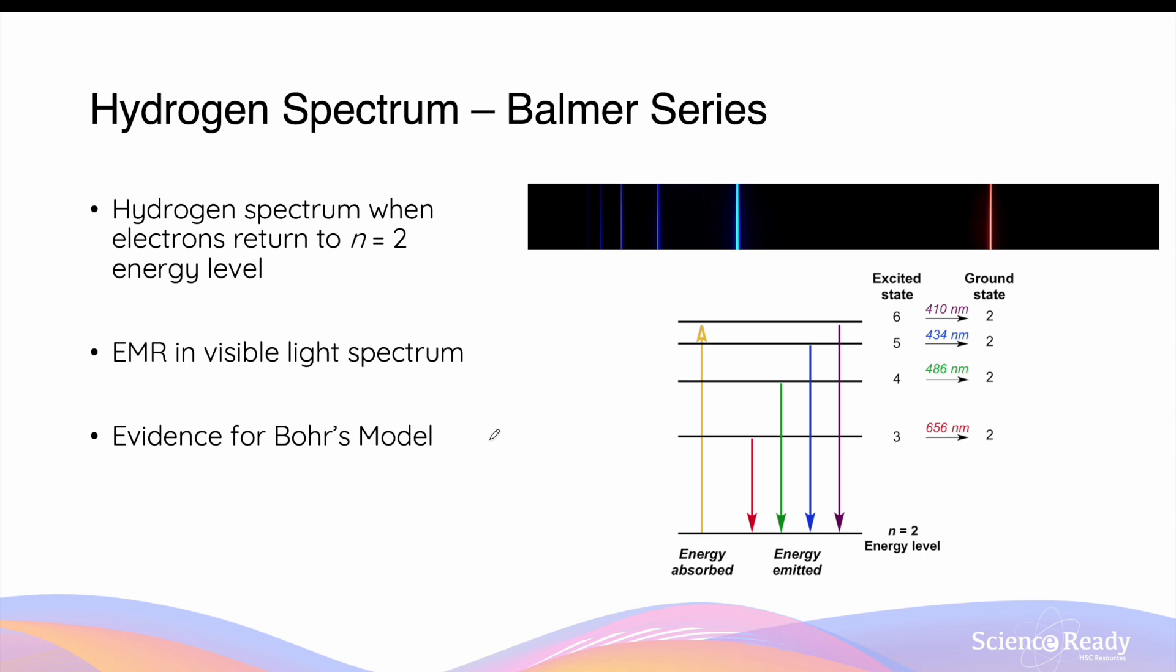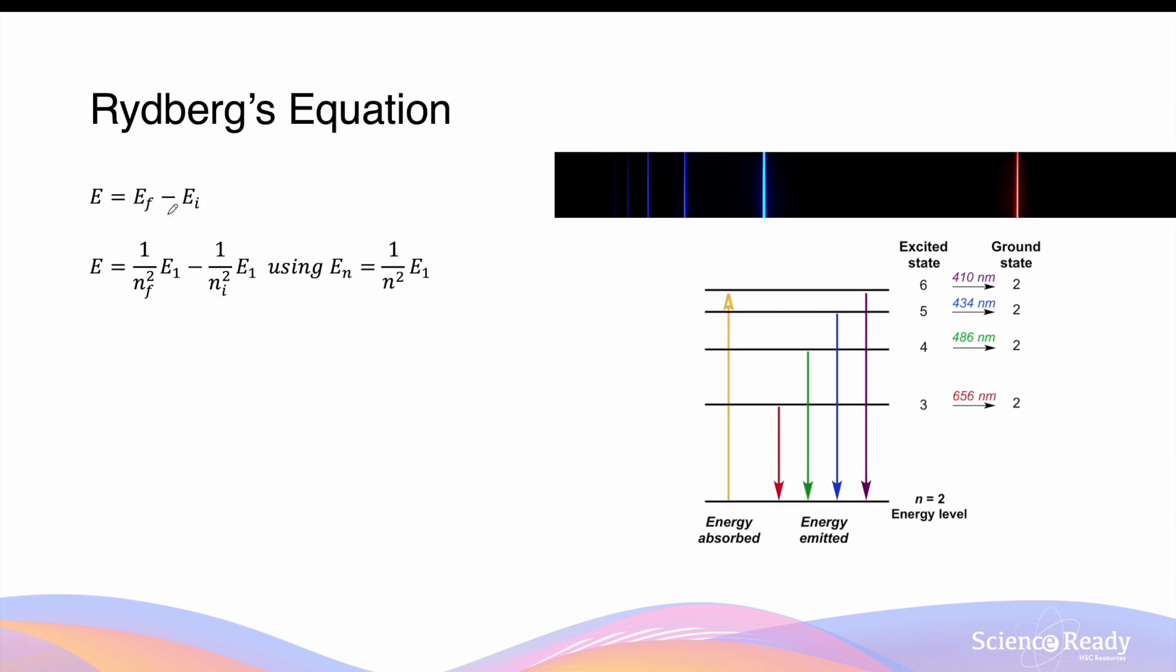As you can see, Bohr's postulate and his atomic model clearly provides an explanation for the presence of these emission lines of hydrogen. In his second postulate, Bohr states that the energy of the radiation emitted is equal to the difference in energy between the different stationary states. The energy of a stationary state is given by 1 over N squared times the energy of the first stationary state E1.